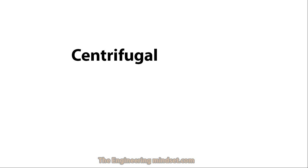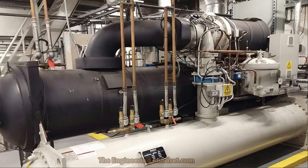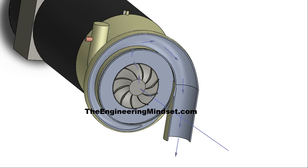The first one we're going to look at is the centrifugal type compressor. It looks a lot like this, and it's quite easy to spot because it's got this large unit up on the top of the chiller. You've got the suction line coming off the evaporator and flowing into this volute shape, and then off of that the refrigerant flows down into the condenser. The refrigerant flows in through the suction line and hits into the impeller blades.